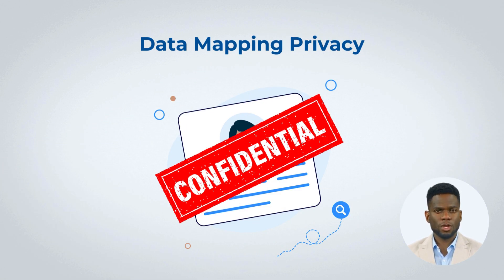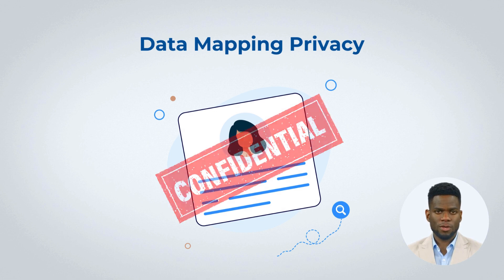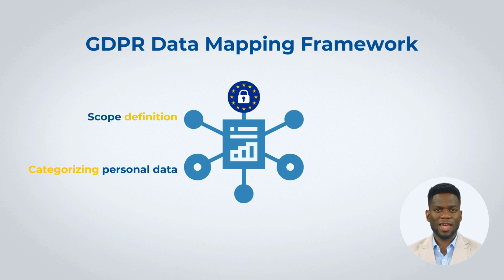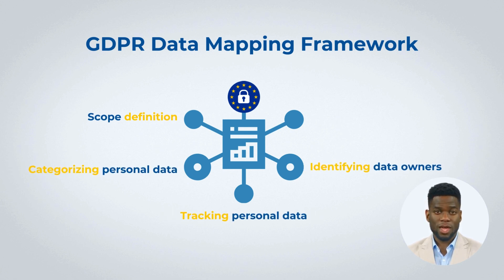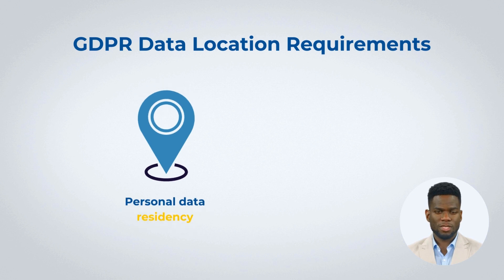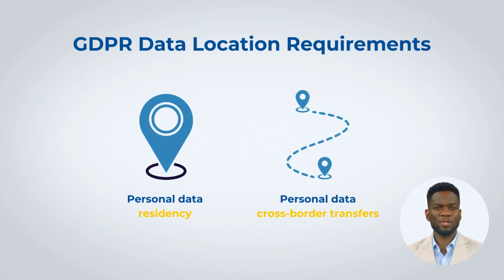Data mapping aligns with GDPR requirements. A data mapping framework provides a structured methodology covering scope definition, data categorization, data flow tracking, identifying data stakeholders, and conducting risk assessments. GDPR data location requirements involve understanding data residency and managing cross-border data transfers to meet GDPR compliance expectations.